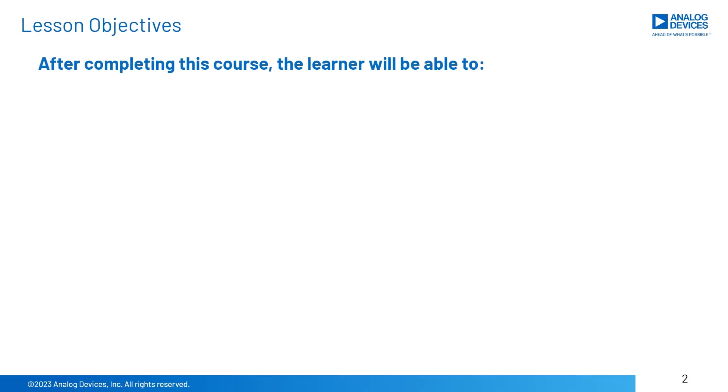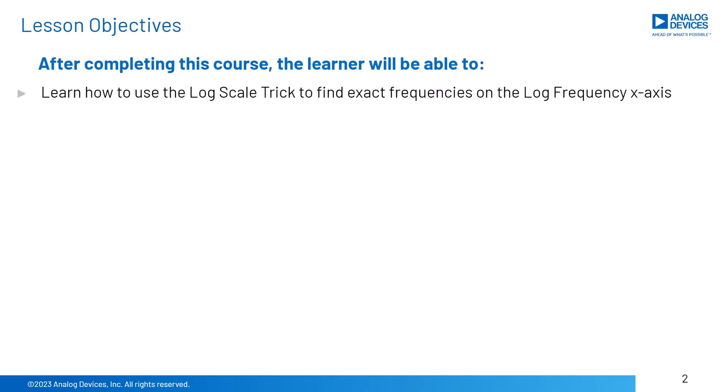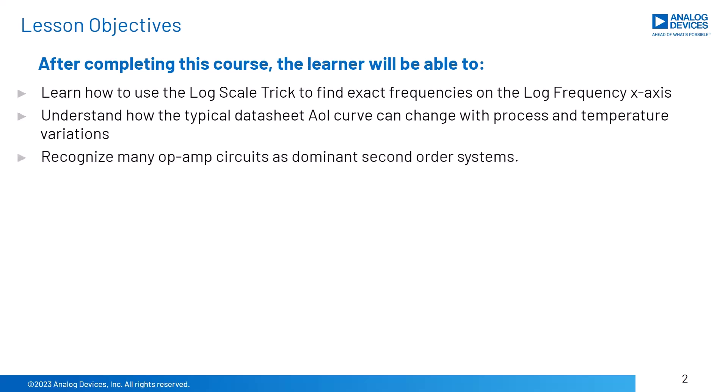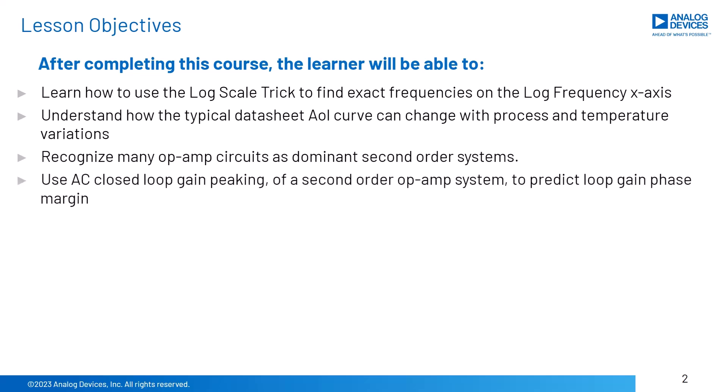After completing this course, the learner will be able to learn how to use the log scale trick to find exact frequencies on the log frequency x-axis. Understand how the typical datasheet AOL curve can change with process and temperature variations. Recognize many op-amp circuits as dominant second-order systems. Use AC closed-loop gain peaking of a second-order op-amp system to predict loop gain phase margin.